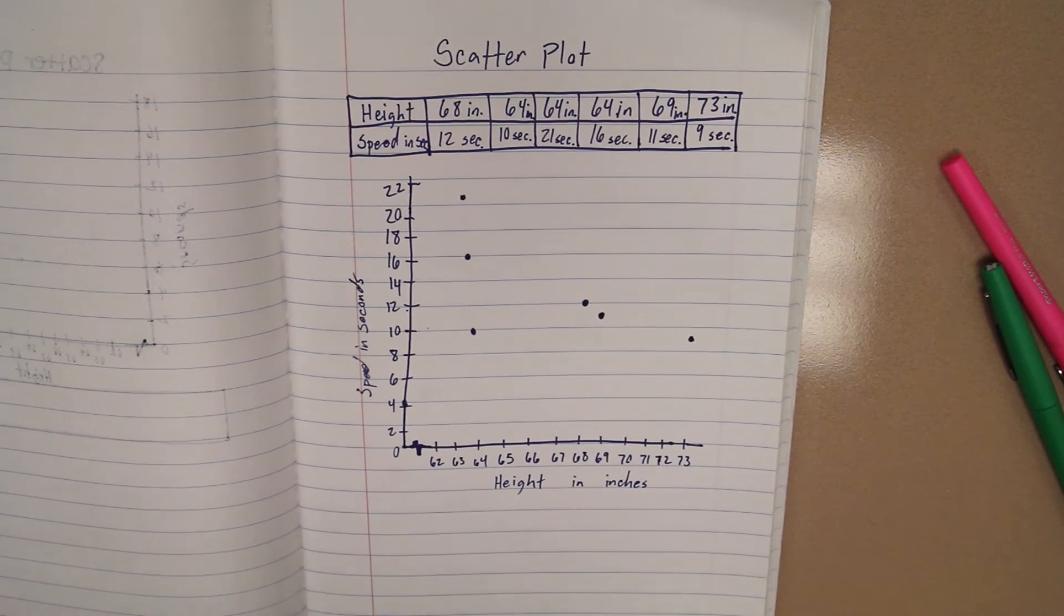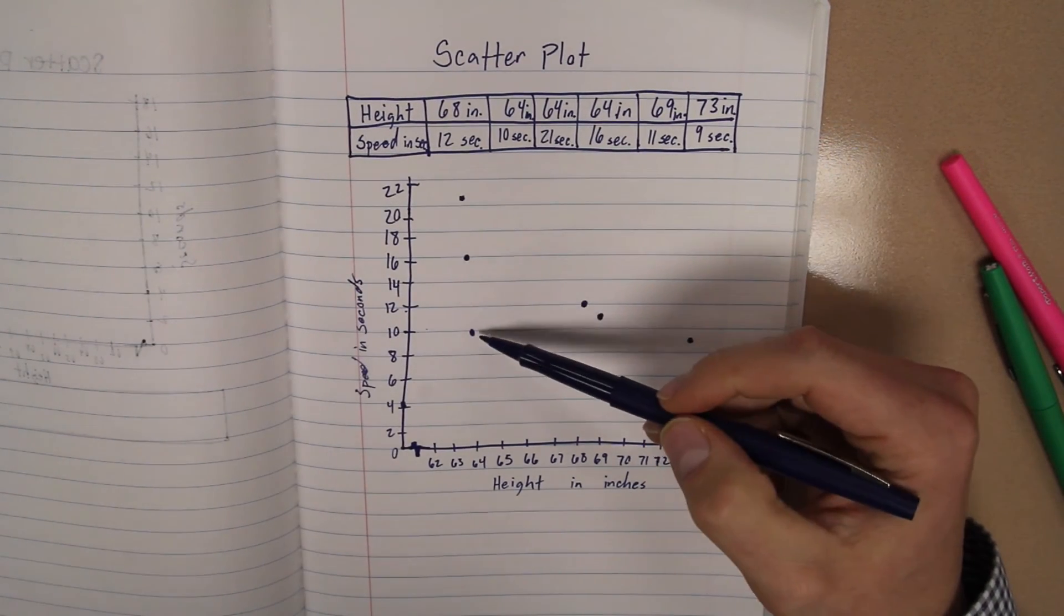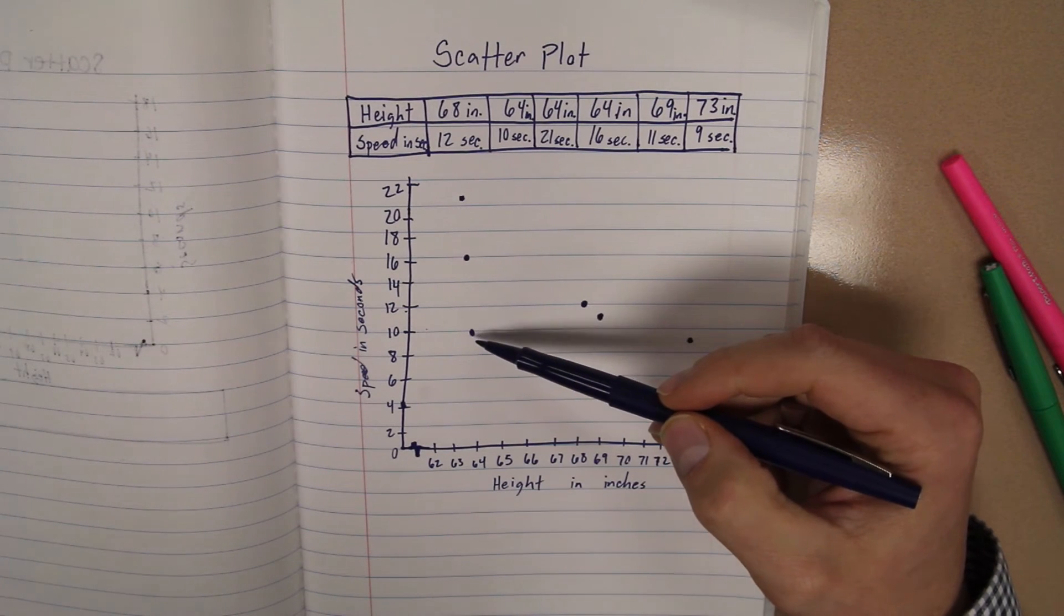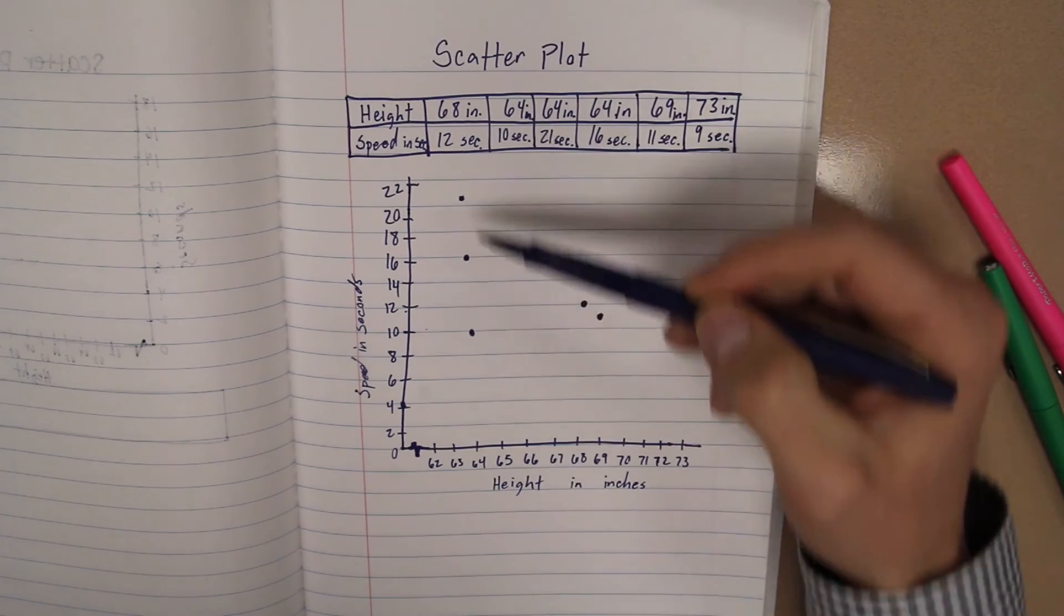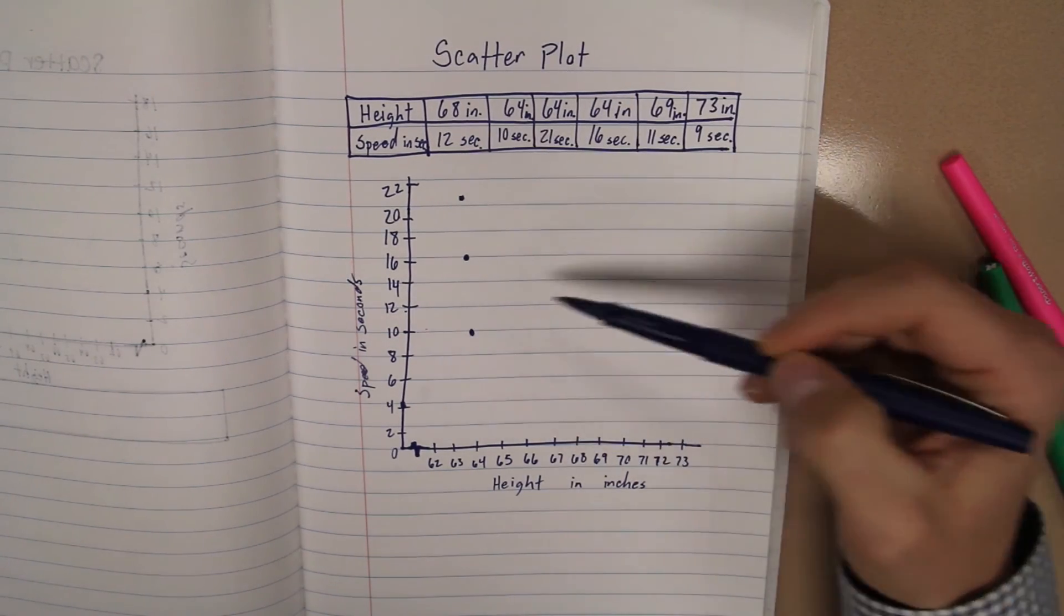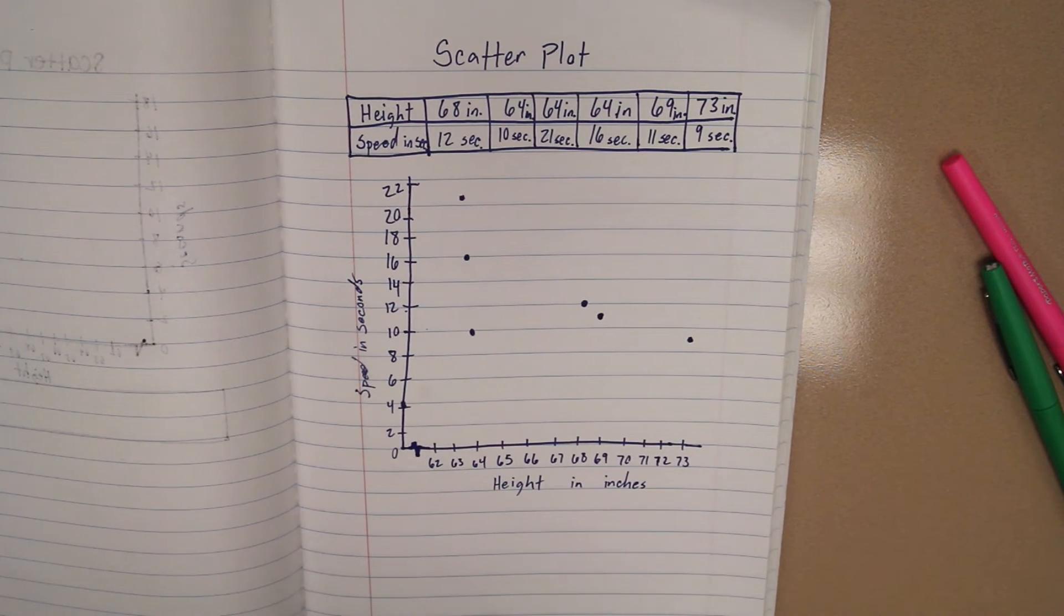All right. So really, was there a correlation? So basically, you had someone that was 64 inches finished at 10 seconds, and someone that was 64 finished at 21 seconds. So it doesn't seem like a whole lot of correlation between. Maybe if we had more data, we could see, did more races with different people at different heights, we might see more of a correlation. But this is how we run a scatter plot.